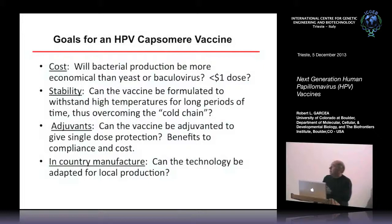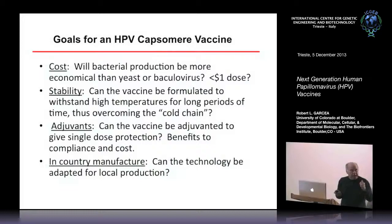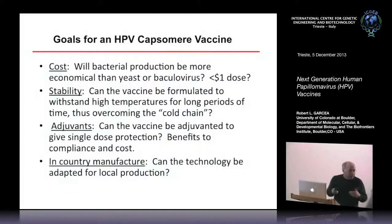Goals for a capsomere vaccine: cost; stability — can the vaccine withstand high temperatures for long periods, unlike Gardasil or Cervarix which still require refrigeration; adjuvants — can you give just one shot and get protection with a very good adjuvant; and critically, can you make vaccine production so simple that you can make it in-country — in India, Pakistan, Argentina — like they do for hepatitis B vaccine? That would dramatically lower the cost.